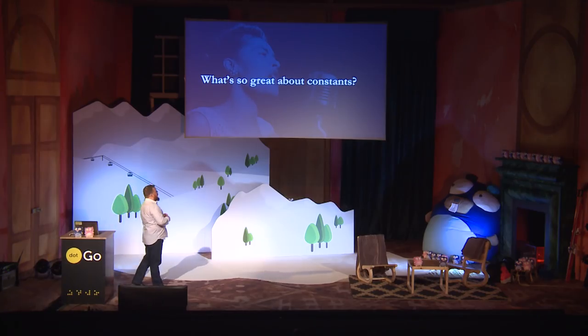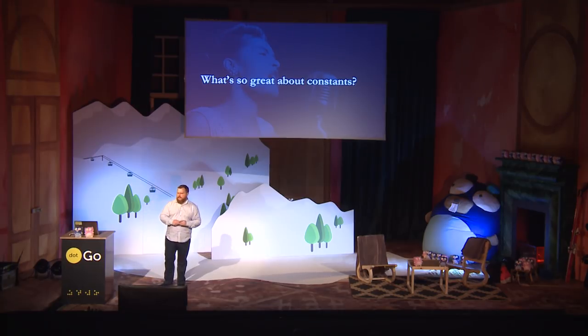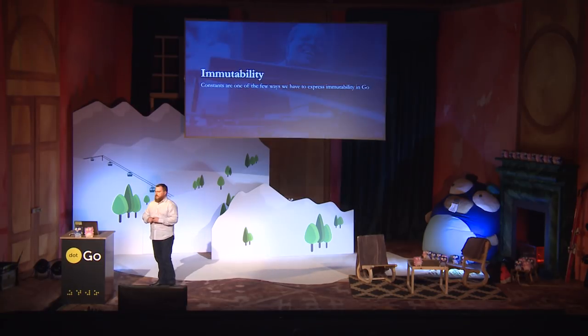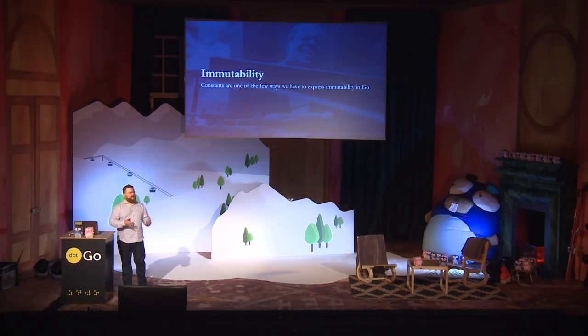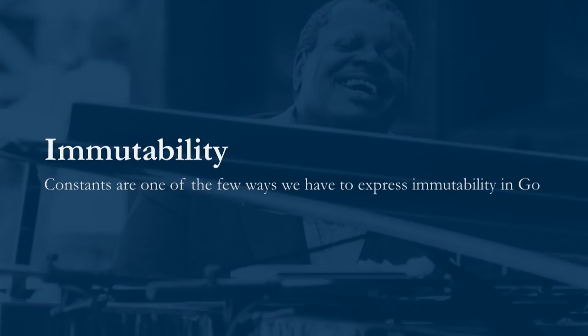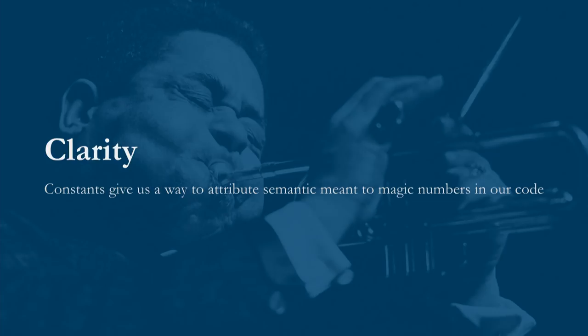To kick it off, what's so great about constants? Immutability. Constants are one of the very few ways we have to tell the compiler that this value will not change. Clarity. Constants give us a way to extract those magic numbers out of our code and give them names and give them semantic meaning.